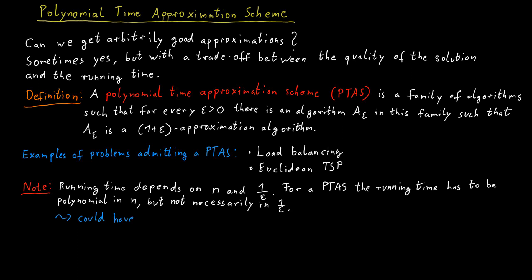So for example, if you have a running time of n to the power of 1 over epsilon, that would be a valid running time for a polynomial time approximation scheme. In this case, the running time is polynomial in n, but it is exponential in 1 over epsilon, because 1 over epsilon is in the exponent of the function.